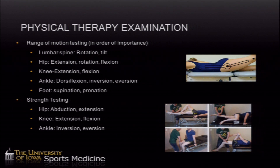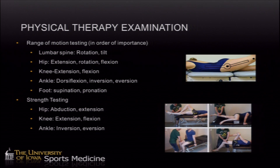For strength testing, we look at the hip, knee, and ankle. At the hip, abduction is generally the primary concern for lumbar, hip, or knee pain — hip abduction is the ability to take the hip away from the body and stabilize in single-limb stance. Hip extension involves the gluteal muscles, the primary movers in running. For the knee, pain doesn't necessarily mean knee weakness, but we'll definitely test it. At the ankle, inversion and eversion — the ability to stabilize the ankle — allows forces to travel up through the body to accelerate or maintain speed.